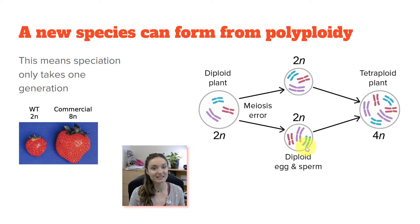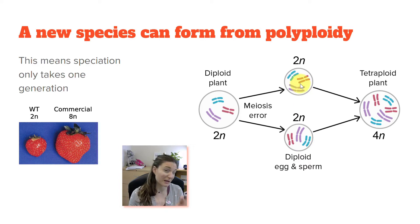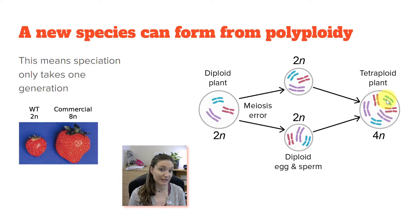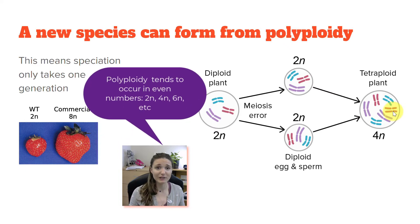Plants have an additional ability — they can self-fertilize. So a diploid egg and a diploid sperm from the same plant can combine together. When that happens and this sperm and egg combine, the resulting zygote would have four copies of each chromosome — it's tetraploid. This tetraploid plant, this new tetraploid zygote, is viable. Plants are fine with having extra copies of their genome — not a big deal to plants.